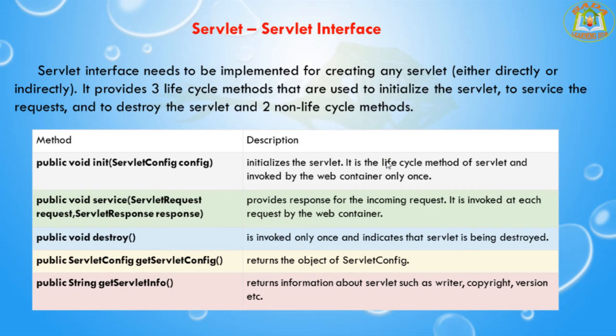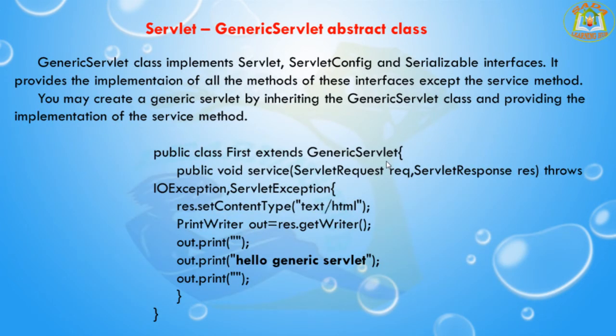The third lifecycle method is the public void destroy method, which is invoked once and indicates the servlet is to be destroyed. The fourth method is getServletConfig, which returns the object of the ServletConfig. The fifth method is public String getServletInfo, which returns information about the servlet such as author, copyright, version, and so on.